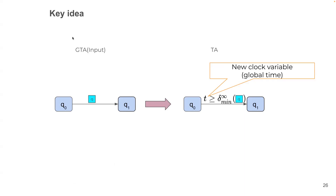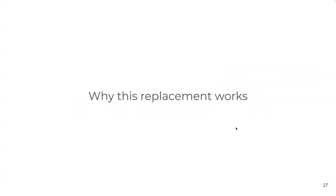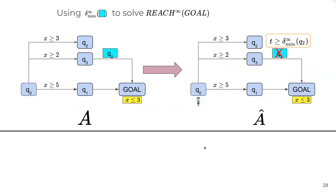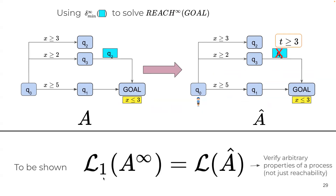The key idea is: given a GTA, for transitions without a location guard we simply copy them to the TA. For transitions with a location guard, we replace the guard with a clock guard on a new global time clock t, such that t ≥ delta_min(q), where q is the location guard. This constructed TA should have the same set of runs as one process in the arbitrary network — that is what we mean by language equivalence.